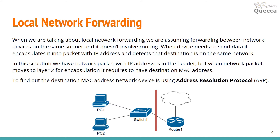When PC1 needs to send traffic to PC2, it encapsulates data into a packet with the destination IP address of PC2 and detects that this IP address is on the same network. Then PC1 needs to encapsulate this packet at layer 2, which requires a destination MAC address. If this is the first time forwarding occurs, PC1 doesn't have the MAC address of PC2.